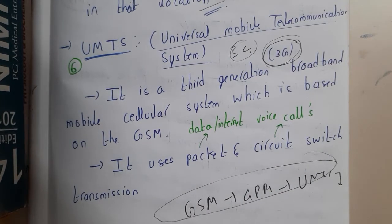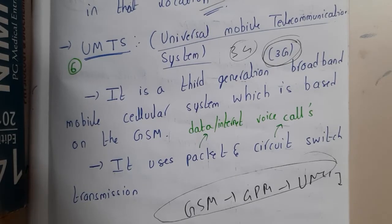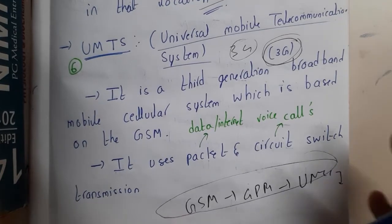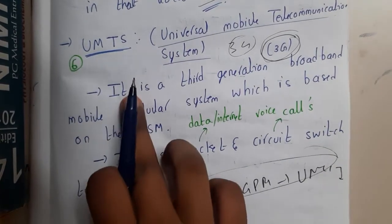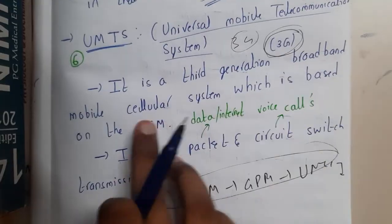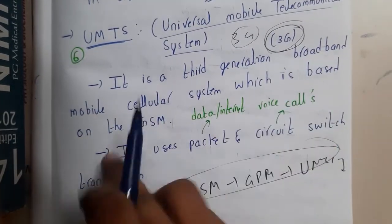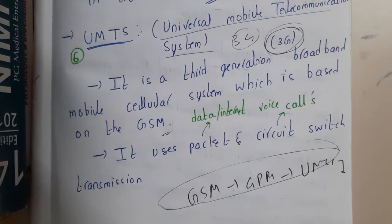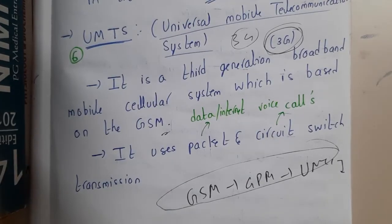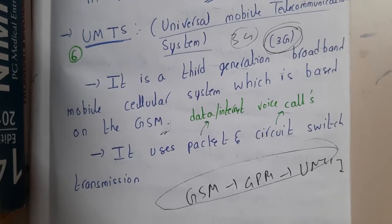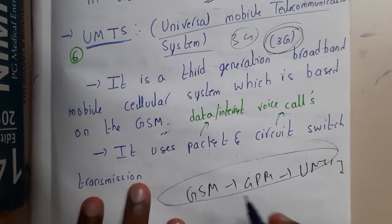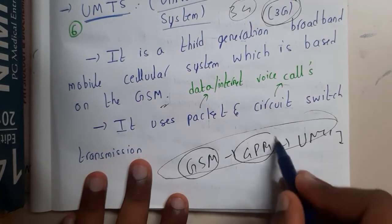Even nowadays we are using 3G. It is a third generation broadband mobile cellular system which is based on GSM. Remember, any telecommunication mechanism or system always depends on GSM because GSM is the father of all of them. From GSM only, GPRS emerged.